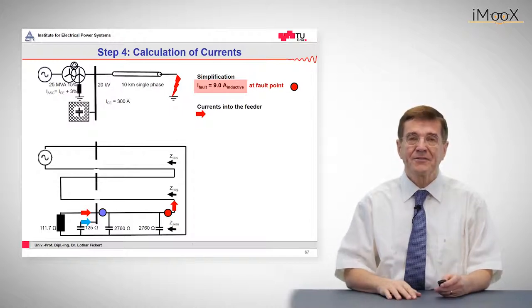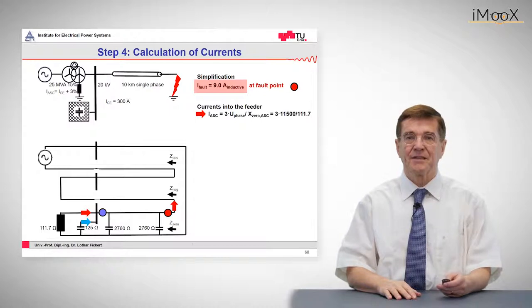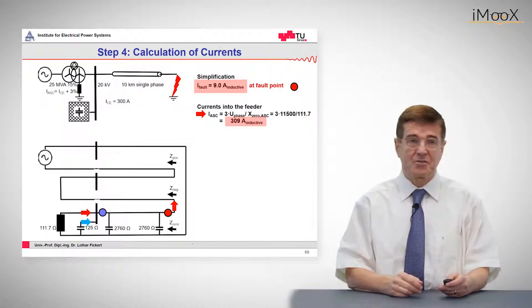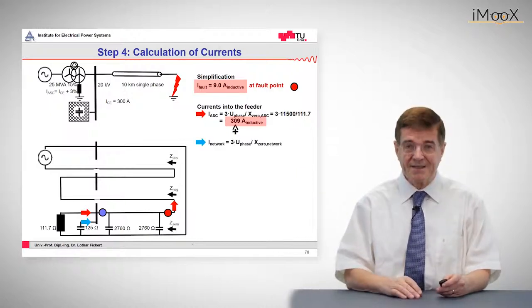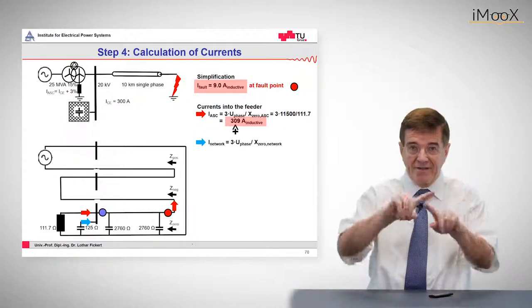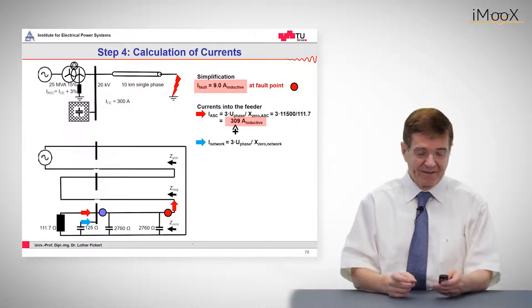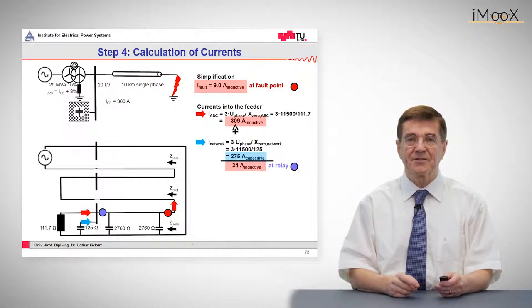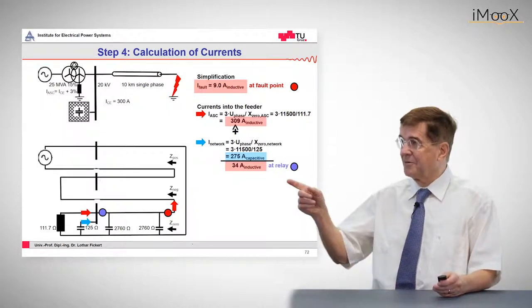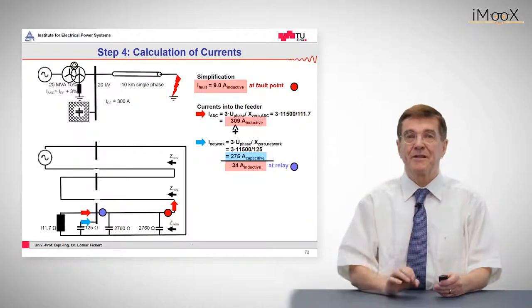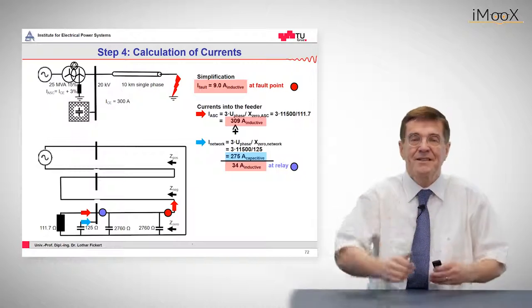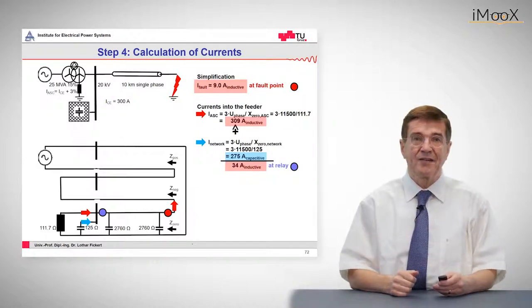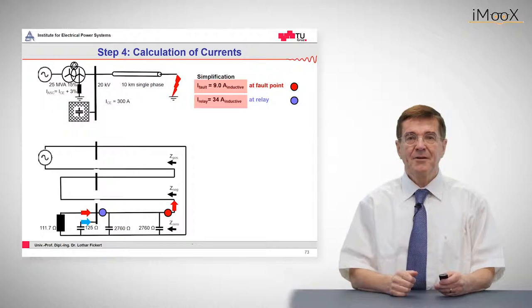First, the reactive current from the arc suppression coil comes out as, you can see here, as 309 amps, which was the set value. And for the capacitances we have to add this, according to the phasor law of addition, with a current of 275 amps. All together it's a current of 34 amps at the relay, which is not the same as at the fault point. And that must be kept in mind because this increase in current, in reactive current, makes it difficult for the relays to find a good discrimination.